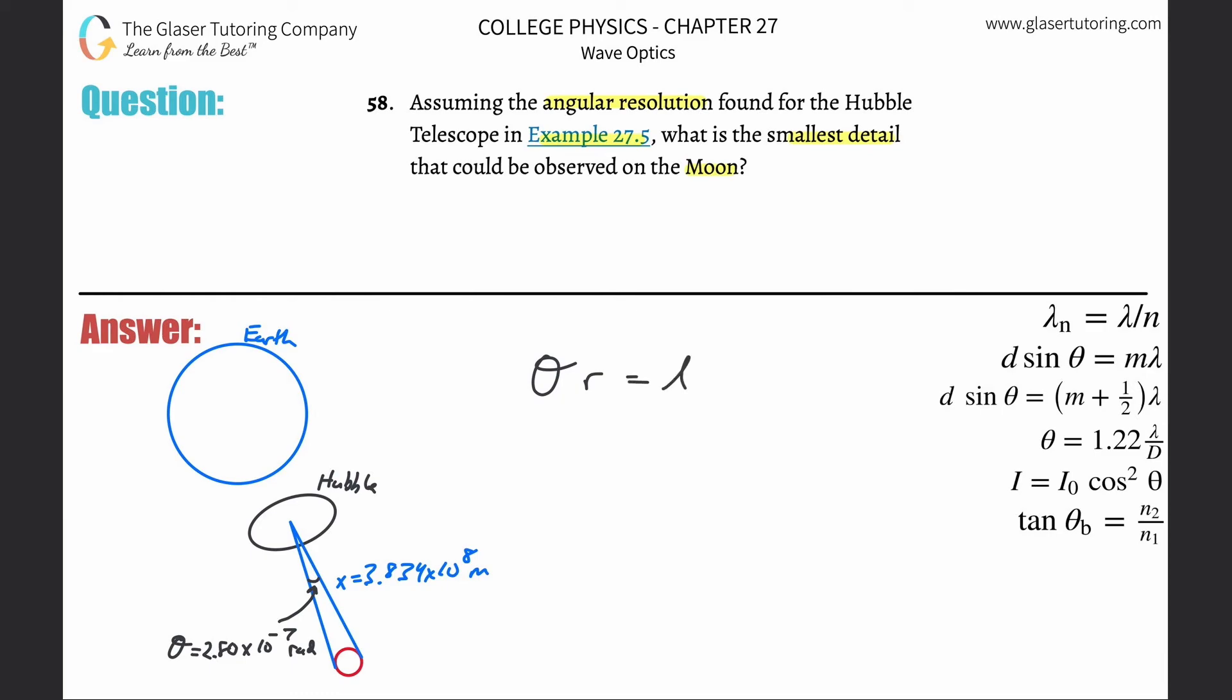Now if you use that, and by the way, where did this number come from? You can look that up. It's the distance between the Hubble telescope and the moon. That we need to know.